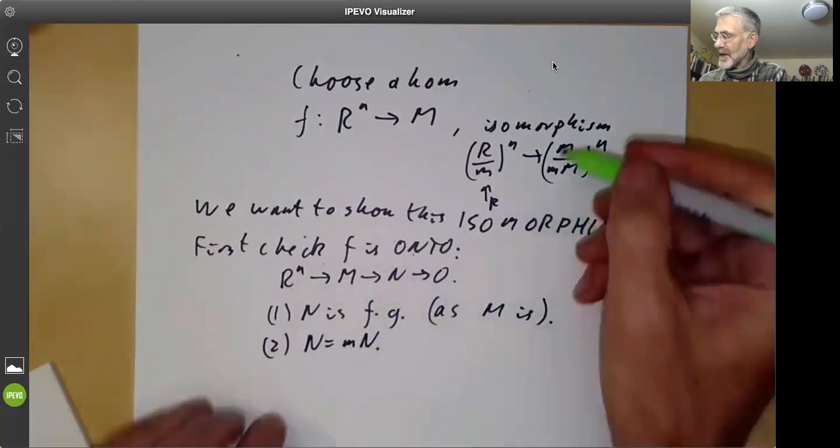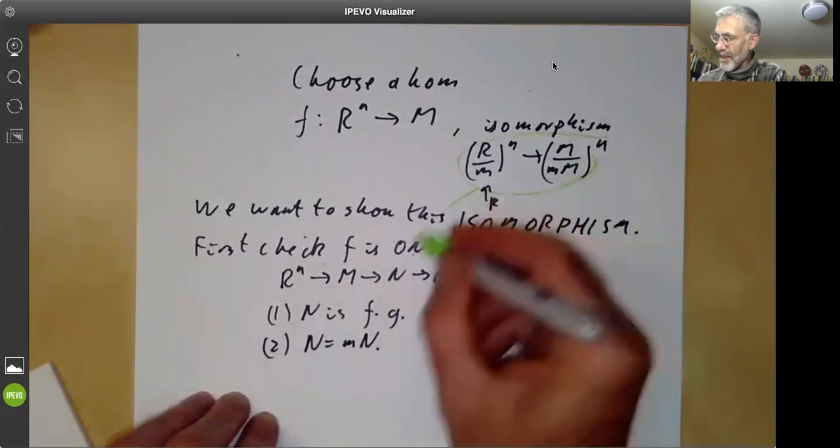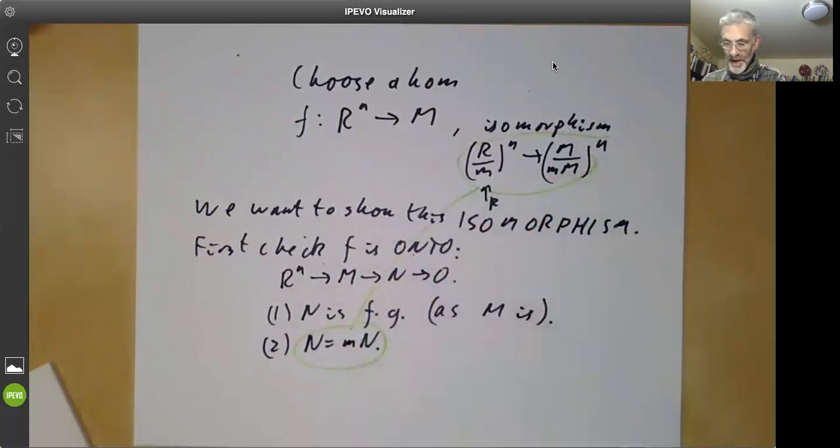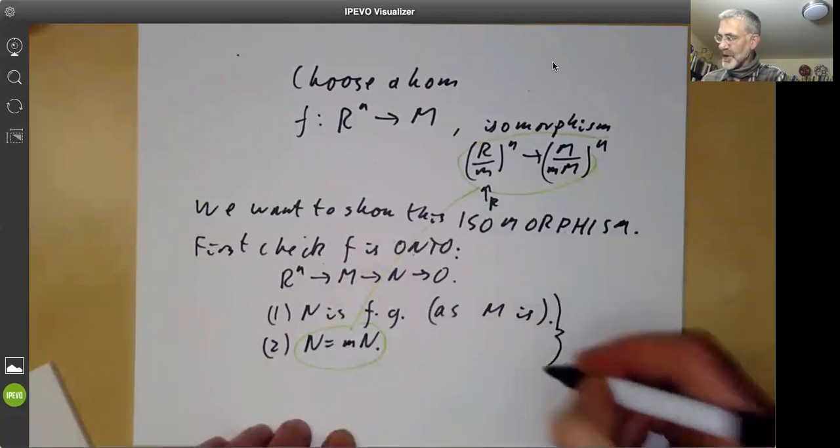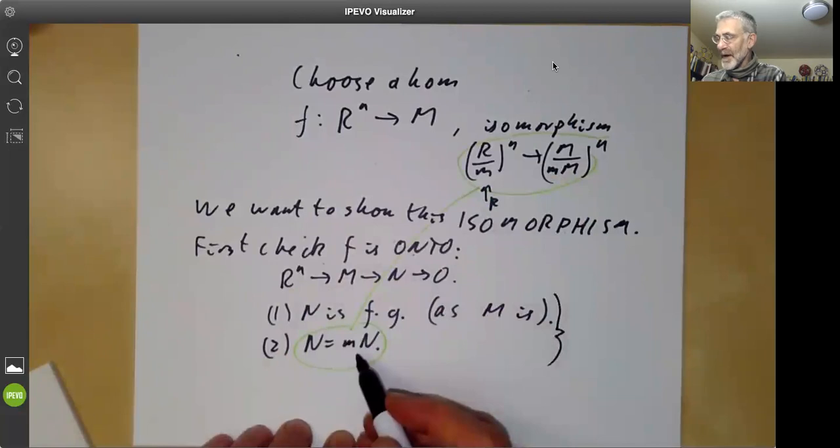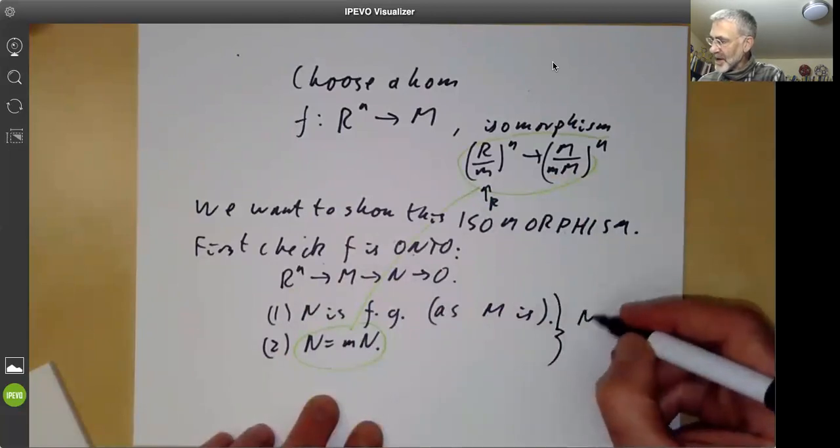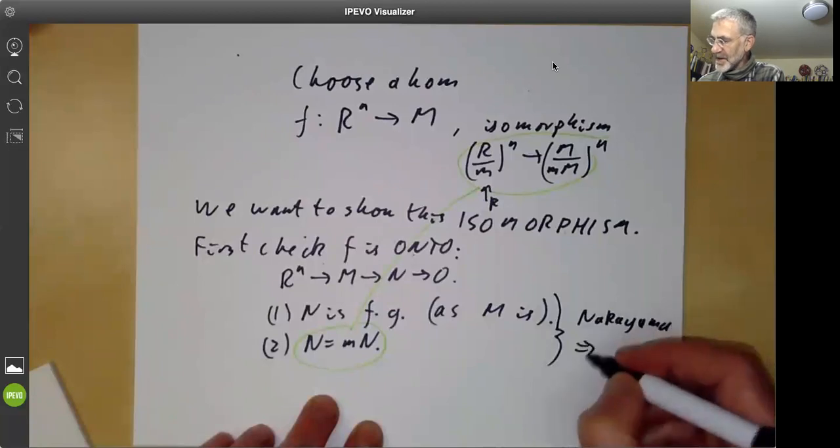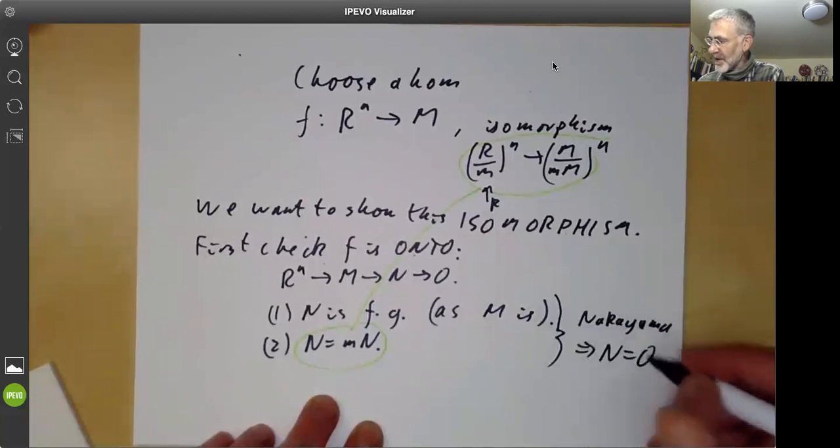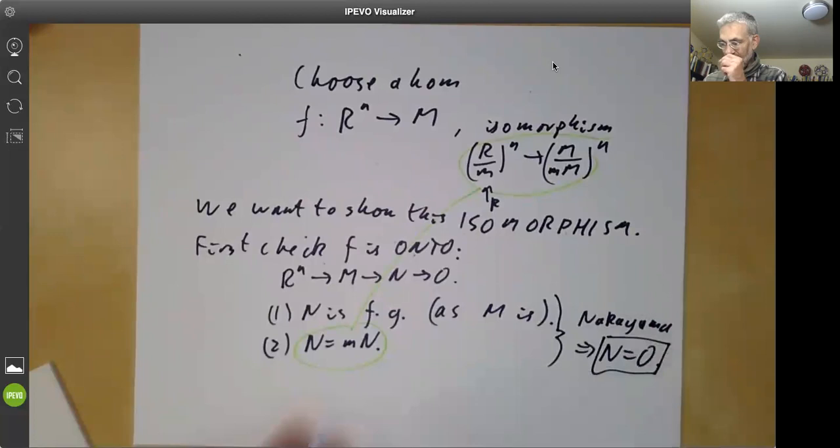So that comes from this condition here. And now you know that these two conditions are exactly what you need for Nakayama's lemma. So Nakayama, this implies that N is equal to zero. So F is onto.